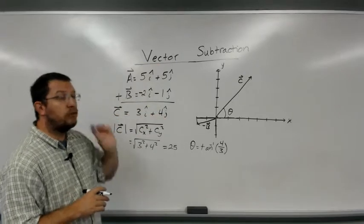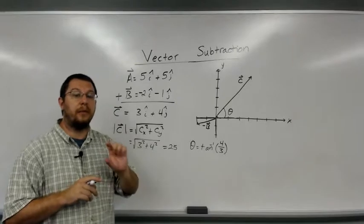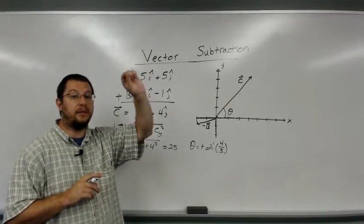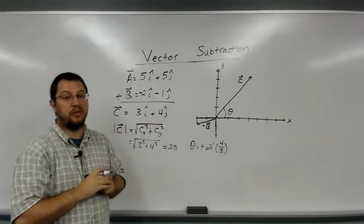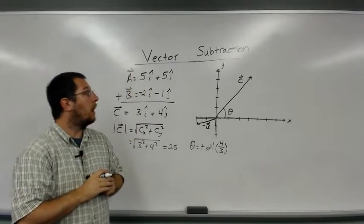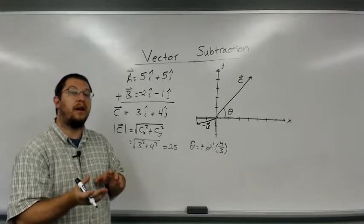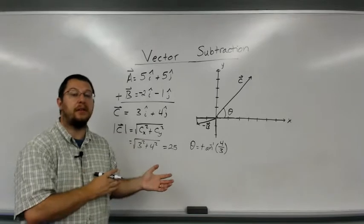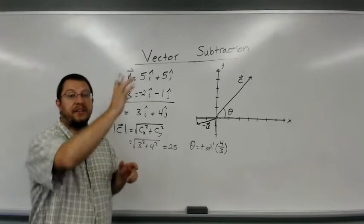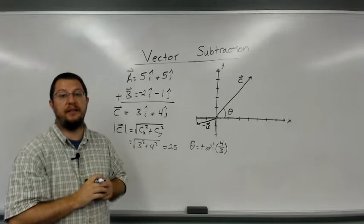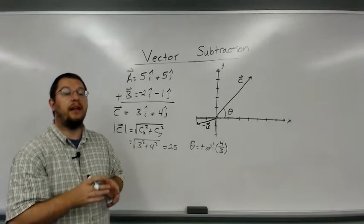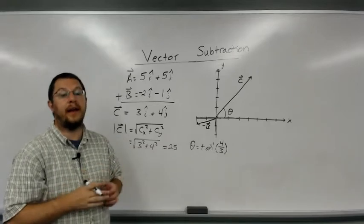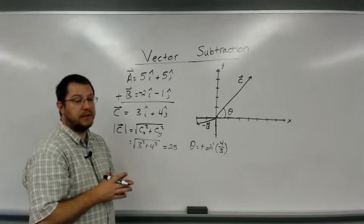You can graphically do it by drawing a vector from the vector that's being subtracted to the vector being subtracted from, displace that vector to the origin, or you can draw a negative vector of the vector being subtracted and do the tip-to-tail method up to the vector that is being subtracted from, and then draw your new resultant from the origin to that new tip, and that will get you the resultant.